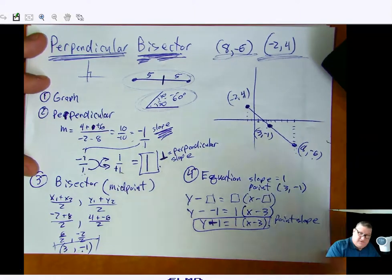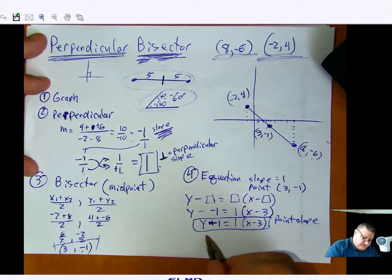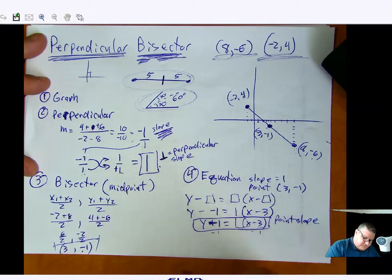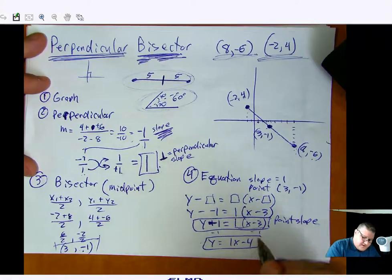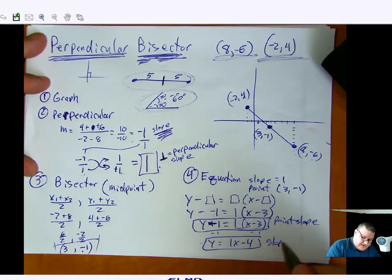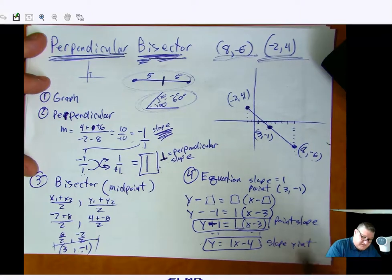If you wanted to, could you get y equals mx plus b? Sure. Give the 1 away. That's easy. Then subtract 1, subtract 1. y equals 1x minus 4. And there is the slope y-intercept form of the exact same line.